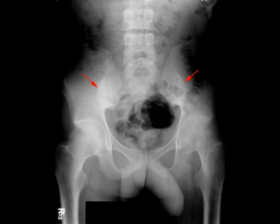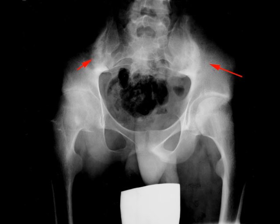The red arrows demonstrate sclerosis along the iliac side of both sacroiliac joints, with slight asymmetry and greater involvement of the right sacroiliac joint. The second image is windowed for better visualization of the sacroiliac joints. No discrete erosions are identified.